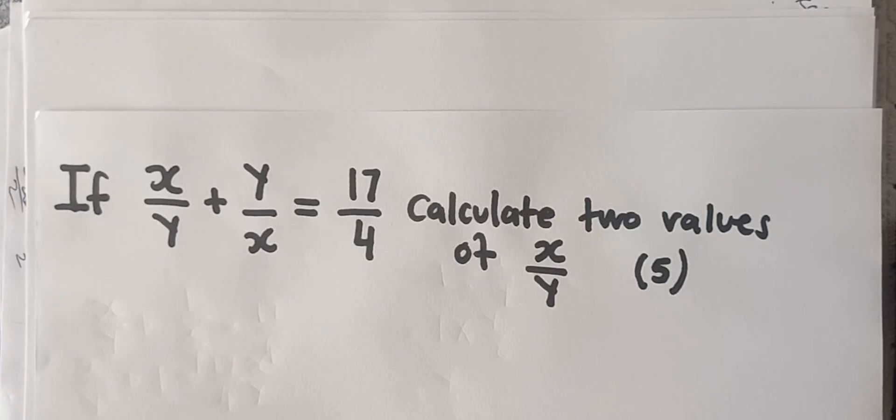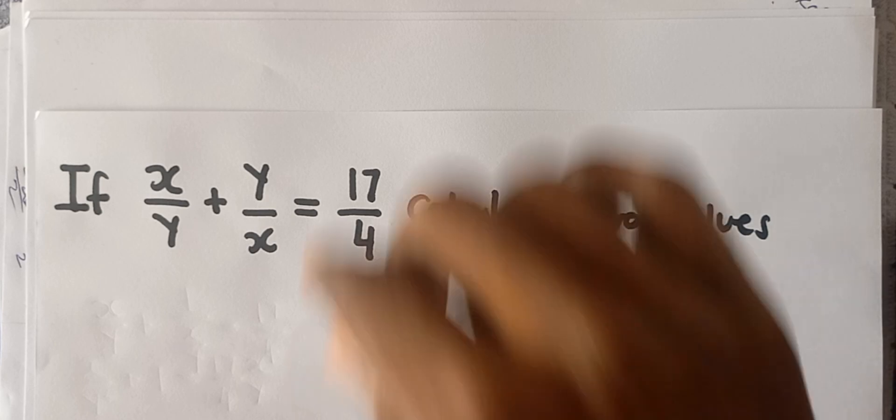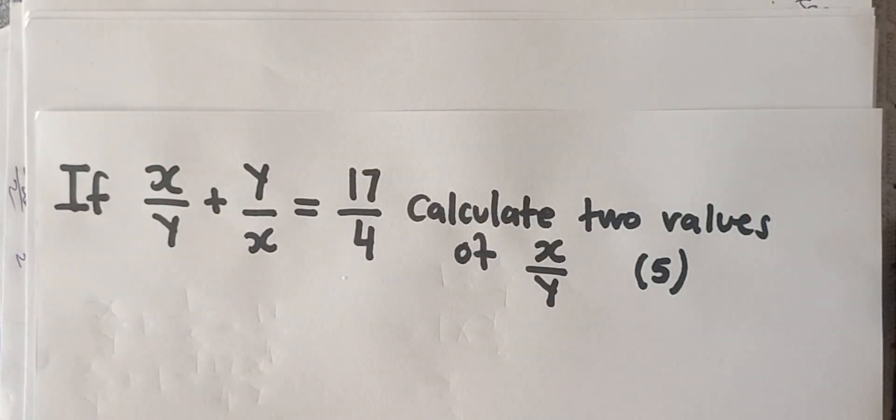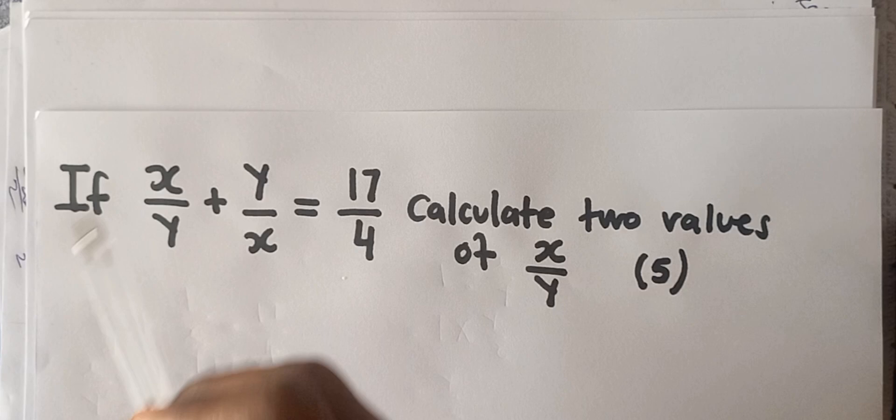Welcome back guys. In this video we're going to look at this algebra equation from a grade 12 paper which is worth five marks. They say that if x divided by y plus y divided by x equals 17 over 4, calculate two values of x over y. This question is a little bit tricky.